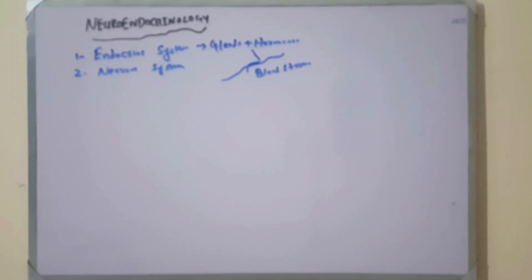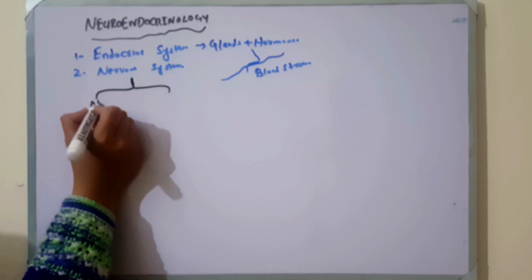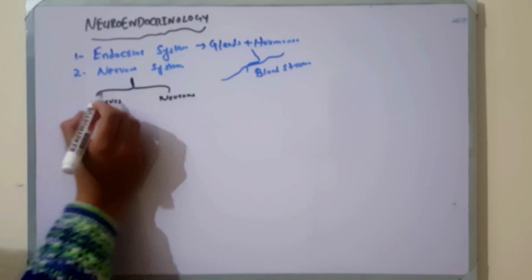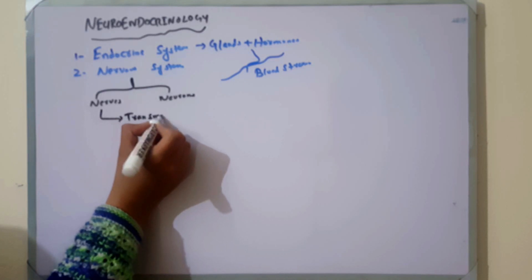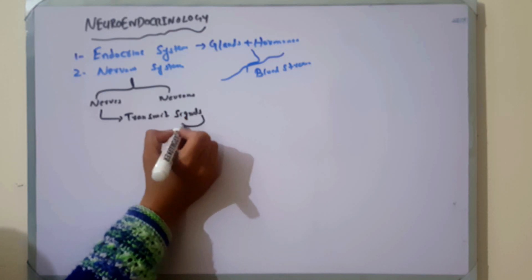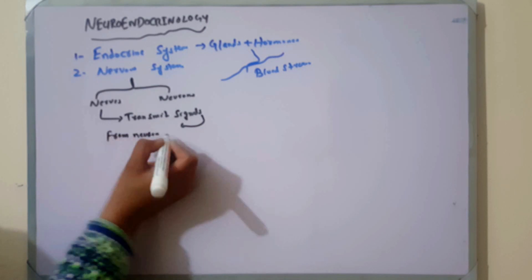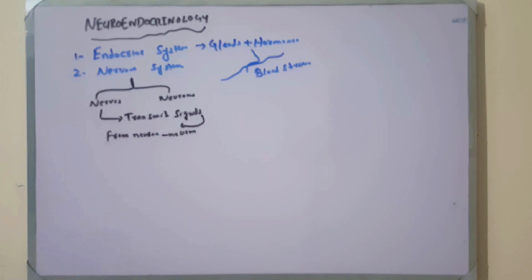The Nervous system is the system of nerves and secretory cells called neurons. It transmits signals from one neuron to other neurons, and from neurons to other parts of the body, with the help of neurotransmitters. Neurotransmitters are the chemical messengers of the nervous system.